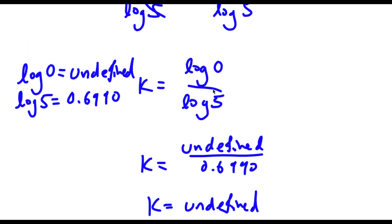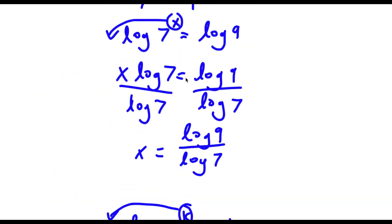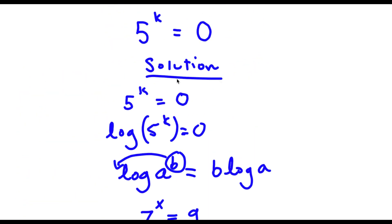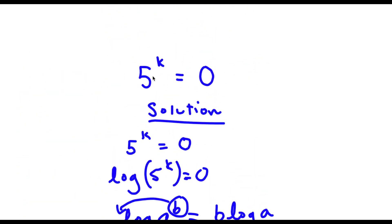You can't take the log of 0, and also you can't take any number to a power and make it equal 0. You can get 1 because if you took 5 to the power of 0 that would equal 1, but 0 isn't possible. You can't take the power of a number and get 0.